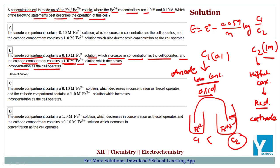So this is the answer: c1 is low concentration and will increase as the cell operates. On the other side, c2 is high concentration where we have reduction, and the Fe²⁺ ion concentration will decrease with time as the cell operates.